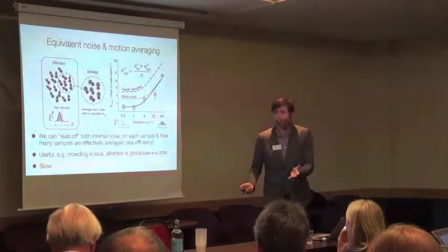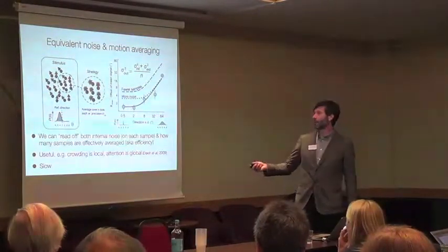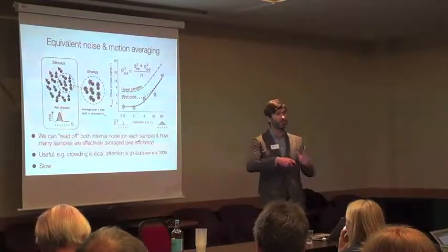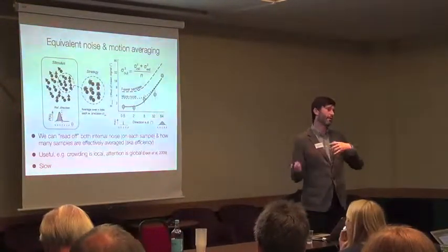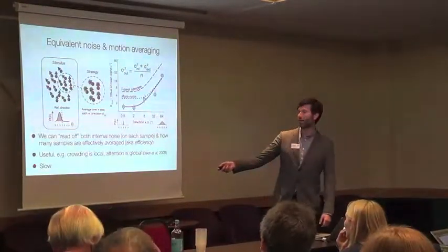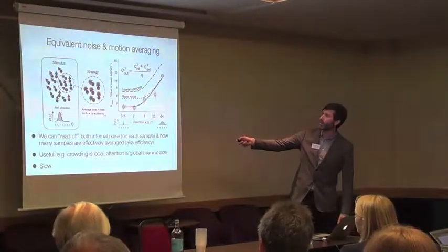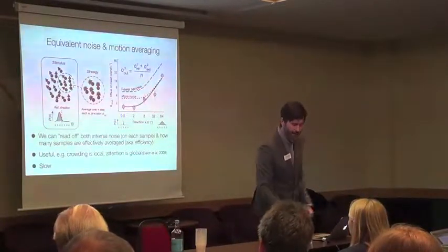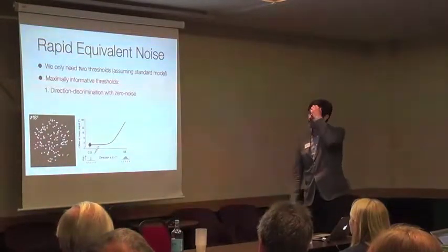We've used it to do some things that are interesting. In the orientation domain, we've shown that crowding, for example, when you have clutter in the periphery, makes you uncertain about individual elements, whereas attention - if you just distract people, then they become less efficient and use less elements. There was a debate about whether crowding was attention, and we showed you could dissociate them, so it's useful. The downside of equivalent noise is it's slow. You have to make lots and lots of measurements. Each of these, remember, we're measuring the smallest offset you can reliably discriminate.